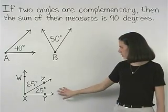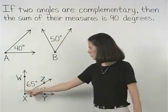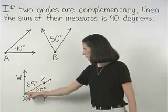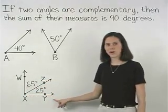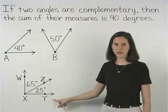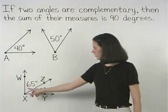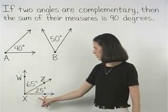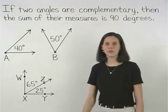In the second diagram shown, angles WXZ and ZXY are complementary because the sum of their measures, 65 degrees plus 25 degrees, equals 90 degrees.